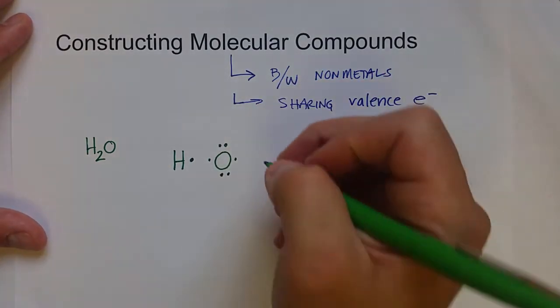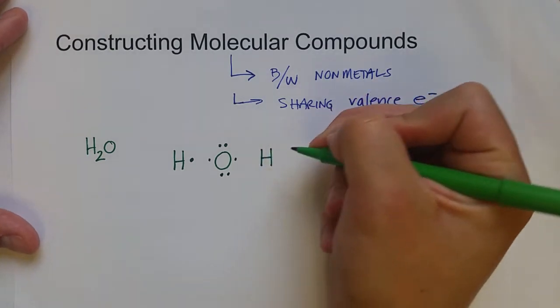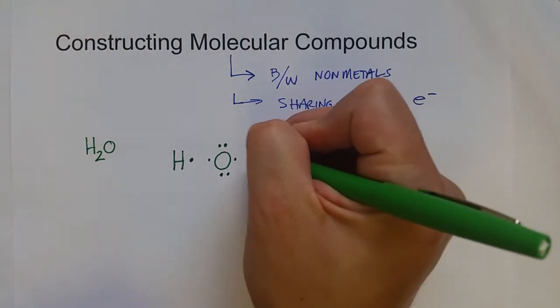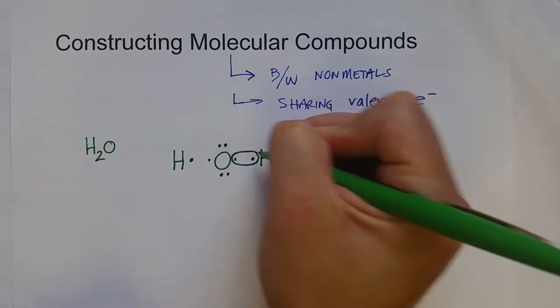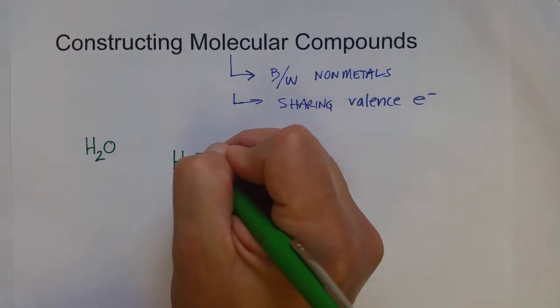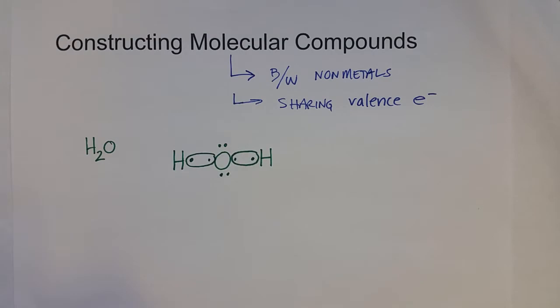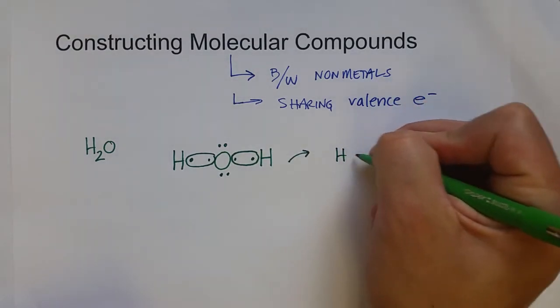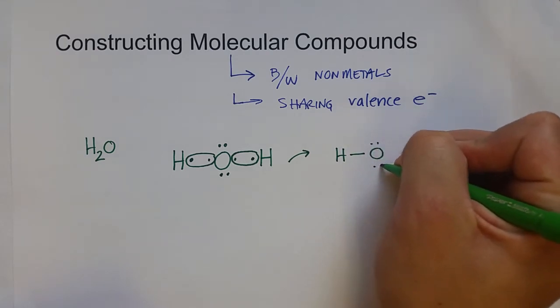Since there are two hydrogen atoms to bond with it, oxygen will share the valence electrons, one valence electron each with each hydrogen atom to form the molecule like this.